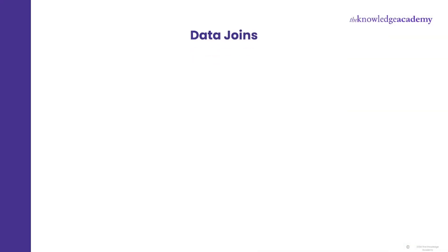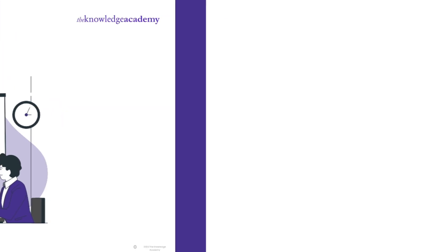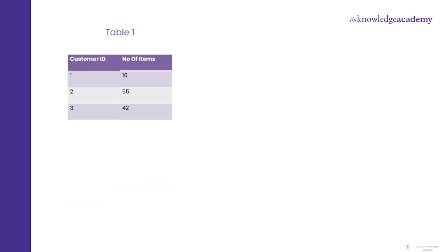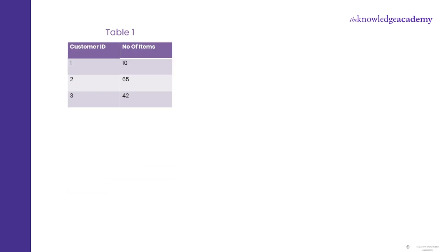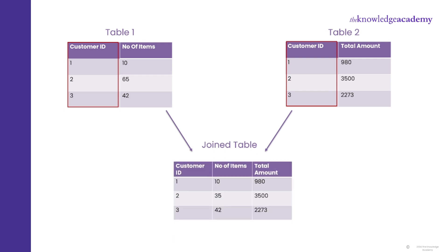Next in line is data joins. SQL has the power of bringing tables together, allowing you to fetch related data in a single query. Think of two tables having records of customers — one table has customer ID and number of items they bought, and another has customer ID and bill amount. Both tables share common ground, and combining this data into one table is better for analysis. SQL has different joins to do that for us.